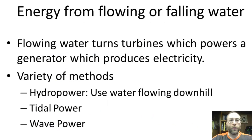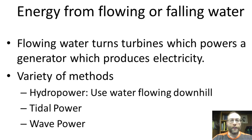First we're going to learn about energy from water. The energy comes from flowing or falling water, which makes electricity by turning turbines, powering a generator that produces electricity. There are three methods: hydropower, which uses water flowing downhill; tidal power, which uses the energy from water moved by the tides; and wave power, which uses the energy found in ocean waves.